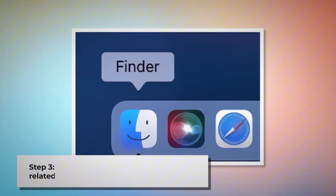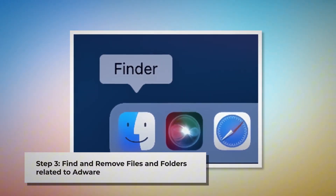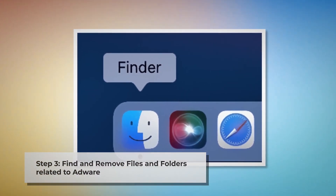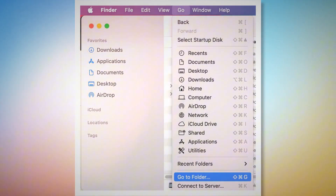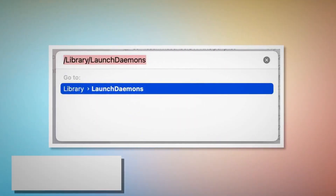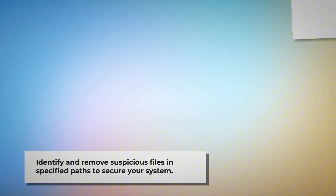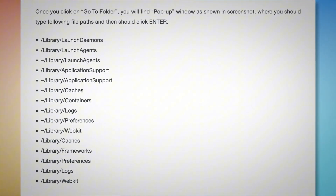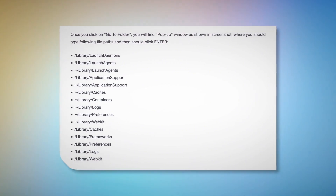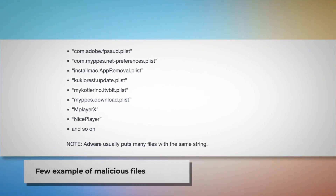Step 3: Find and remove files and folders related to adware. First, make sure you are in the Finder folder. If not, follow the steps mentioned in Step 2 to go to the Finder folder. Once you are in the Finder folder, click on Go at the top menu bar of your Mac, and then click Go to Folder on the drop-down menu, as shown in the screenshot. Once you click on Go to Folder, a pop-up window will appear where you should type these file paths and click Enter — including Library, LaunchDaemons, LaunchAgents, Application Support, and other paths as shown. You should look for suspicious or malicious files and move them to Trash. A few examples of such malicious files are shown here. Note: adware usually places many files with the same string.